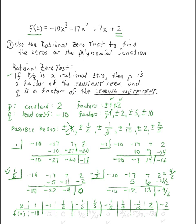Fast-forwarding through the remaining synthetic divisions: when x=1, the function value was negative 18; at x=negative 1, it was negative 12; at x=1/2 we found a zero; at x=negative 1/2 we got negative 9/2. Continuing through the process, we find another zero at x=negative 1/5. At x=negative 2, we find our third zero. Note that you could have also simply plugged each value directly into the function.